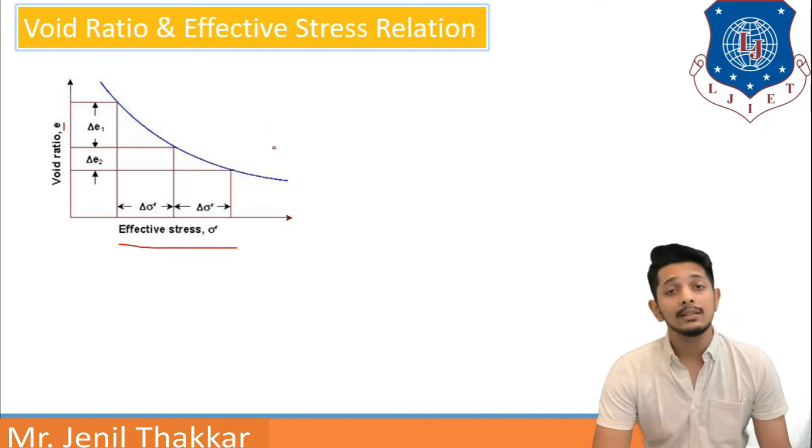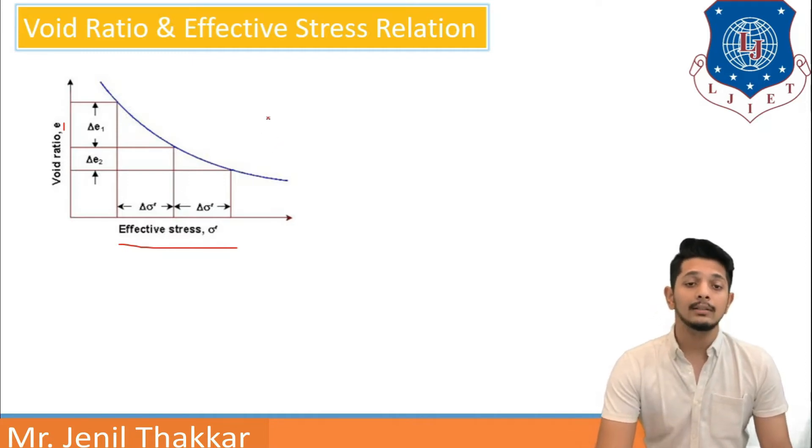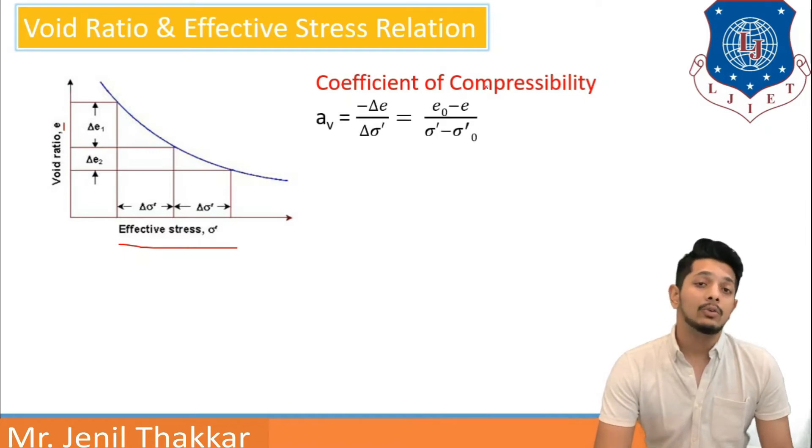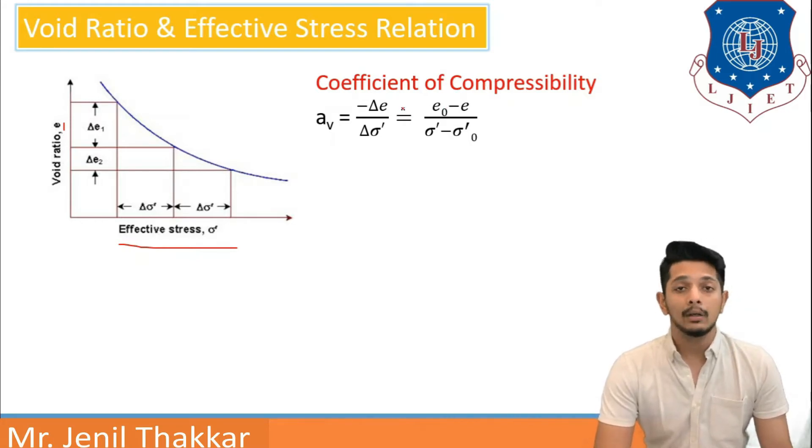Terzaghi has defined some more empirical formulas like coefficient of compressibility. As compressibility coefficient is defined as change in void ratio per change in effective stress, it is denoted as Av. Coefficient of compressibility is equal to minus delta E upon delta sigma dash. Here, it is written as negative. Why negative?